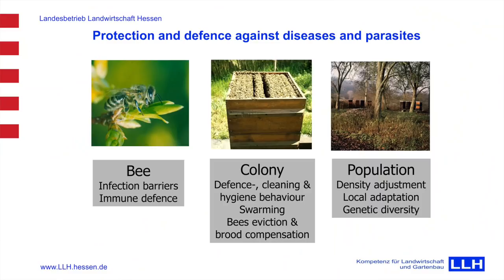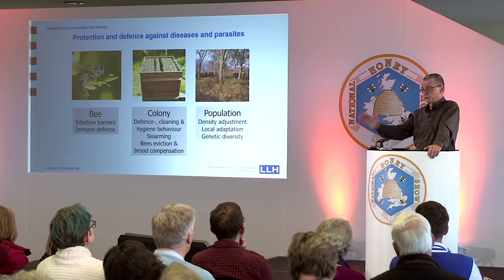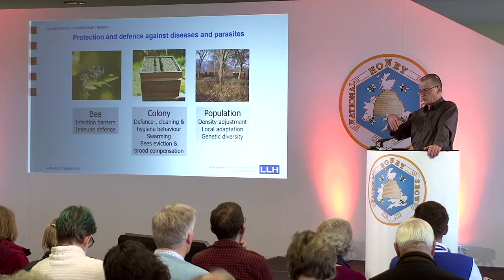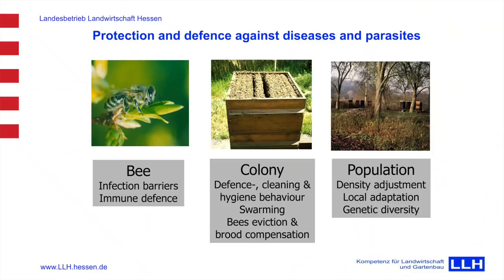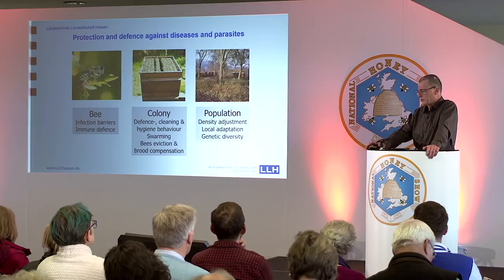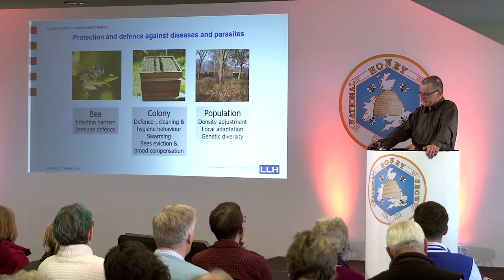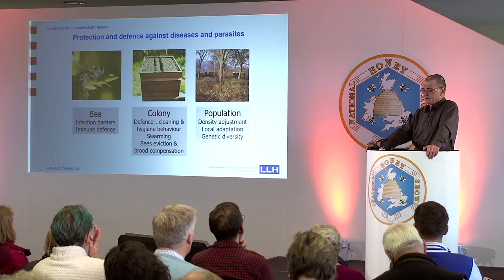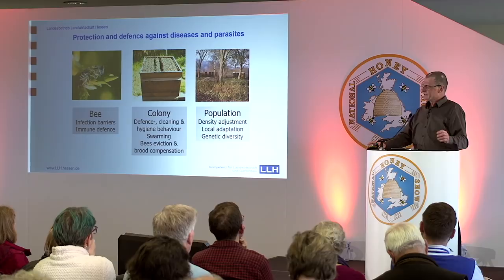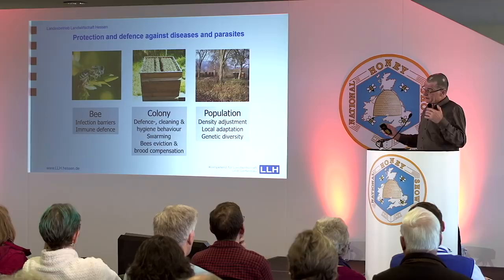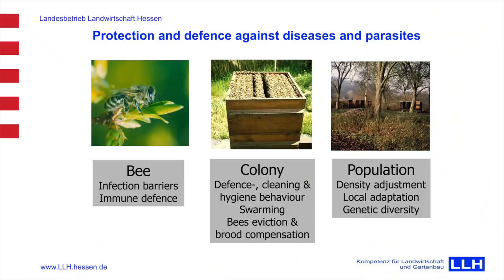At the population level — which we widely neglect — this is how it works in nature: there is density adjustment. If you get health problems, reduce the density of hives to reduce the exchange of parasites, and the lower population can build up again when it develops better resistance rates. There's local adaptation, which plays such an important role in coping best with the natural challenges of your place. And then there's genetic diversity — we discussed this with the 20-drone-mated queens — there's a lot of genetic diversity even within the single hive, but also in the population. This is how bees adapt. At the end, the population is the unit which should survive.